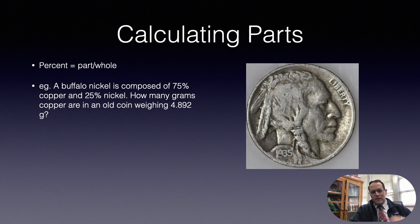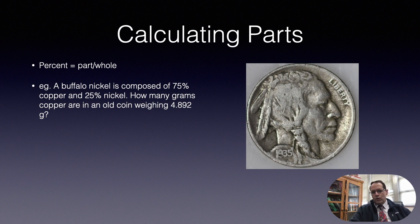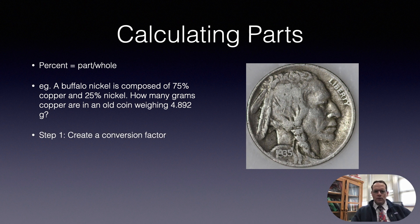In this next part of the tutorial, I want to show how we calculate parts of substances using the percent equation or the percent formula. Again, the percent is the part divided by the whole. Here's an old buffalo nickel, and because of erosion, maybe it weighs 4.892 grams. The known composition of this material is 75% copper and 25% nickel. So the question here is how much copper is in this? First you want to create a conversion factor using the percents. This may be something new to you, but it's a useful tool to use in chemistry class.